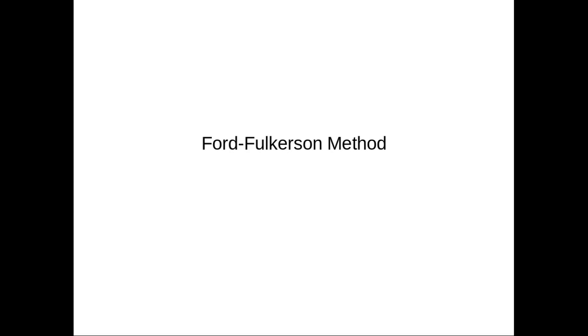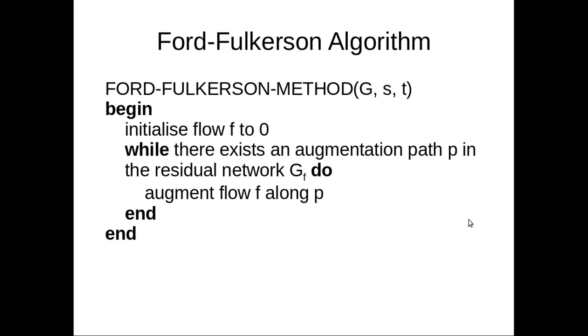So let's move on to talk about the Ford-Fulkerson method itself. So we have the Ford-Fulkerson method, and we take the graph, the source, and the sink. So we begin, we initialize the overall flow to zero, and while there exists an augmentation path P in the residual network GF, we do the augmentation flow along P. So now I'm going to show you an example so you get a better understanding of this.